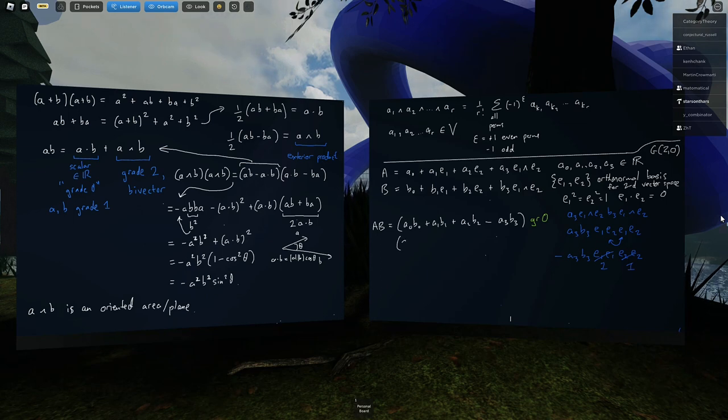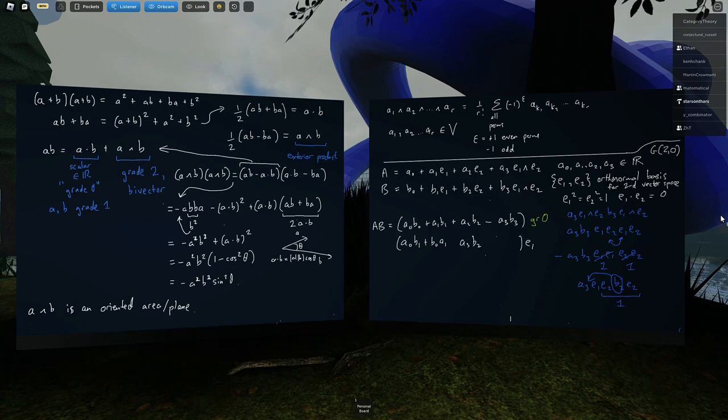And that's the grade zero term. Now, I'm going to get a grade one term from A0B1. So this is now the E1 coefficient. A0B1, B0A1 gives me that. Also, A3B2. Because now A3E1E2, B2E2. This goes out front because it's a scalar. E2² is 1, which gives me an E1. And I do have some notes which I'll post after this with the full completion of this. But just for the sake of time, I'm going to say that there are four terms here in each scalar coefficient.